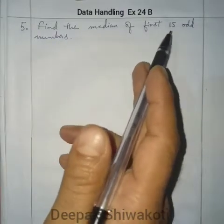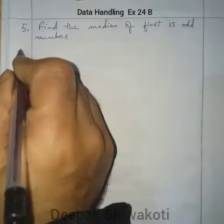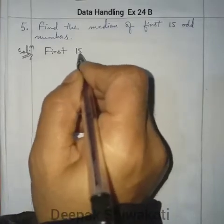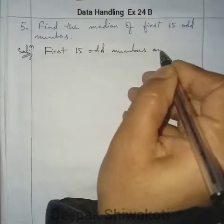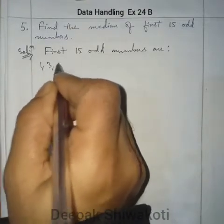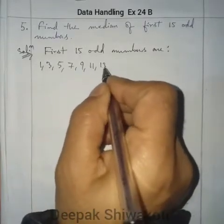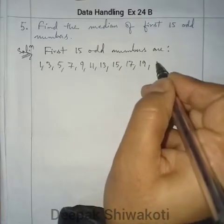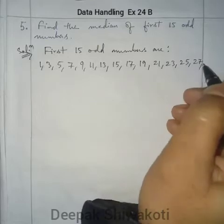Question 5: Find the median of the first 15 odd numbers. First we write the first 15 odd numbers starting from 1: 1, 3, 5, 7, 9, 11, 13, 15, 17, 19, 21, 23, 25, 27, 29.